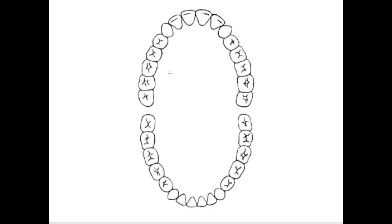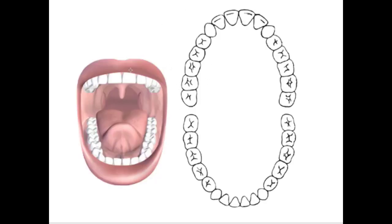First I want to introduce this diagram — it's incredibly important and you'll probably see something like it hanging up in a dental office. This picture from 3D Science helps us get oriented. We're basically looking at our patient in the dental chair with their mouth wide open. Their right side is on the left side of this image, and their left side is on the right side, which does make things very confusing at first.